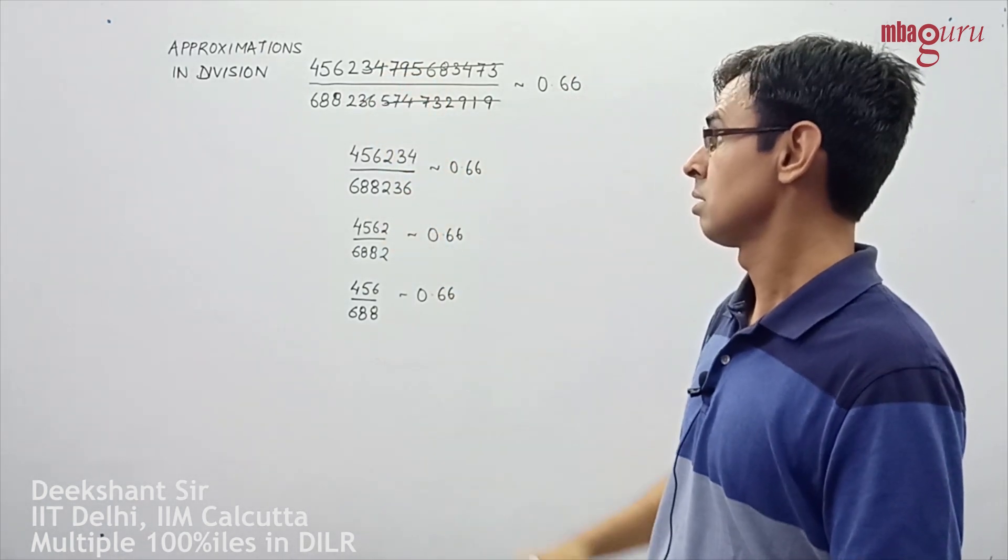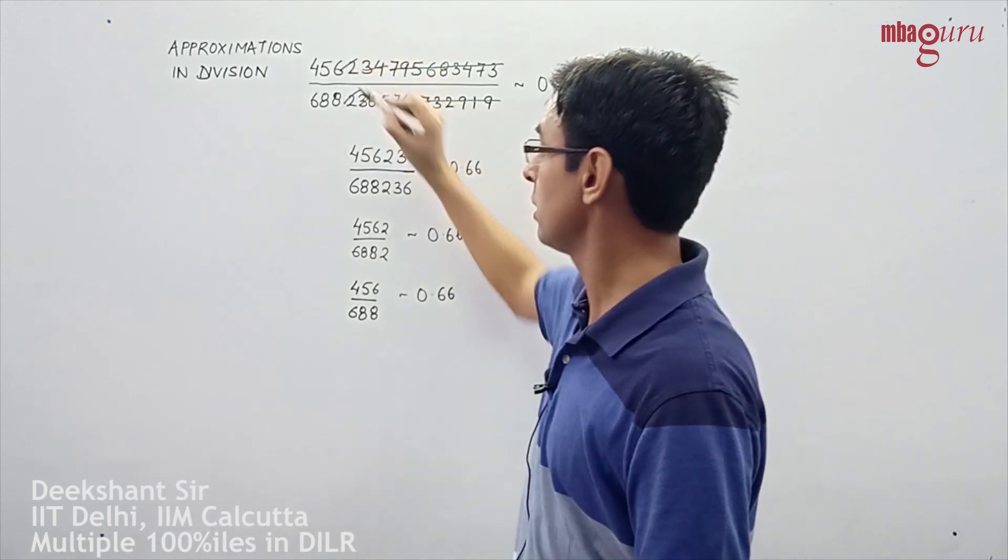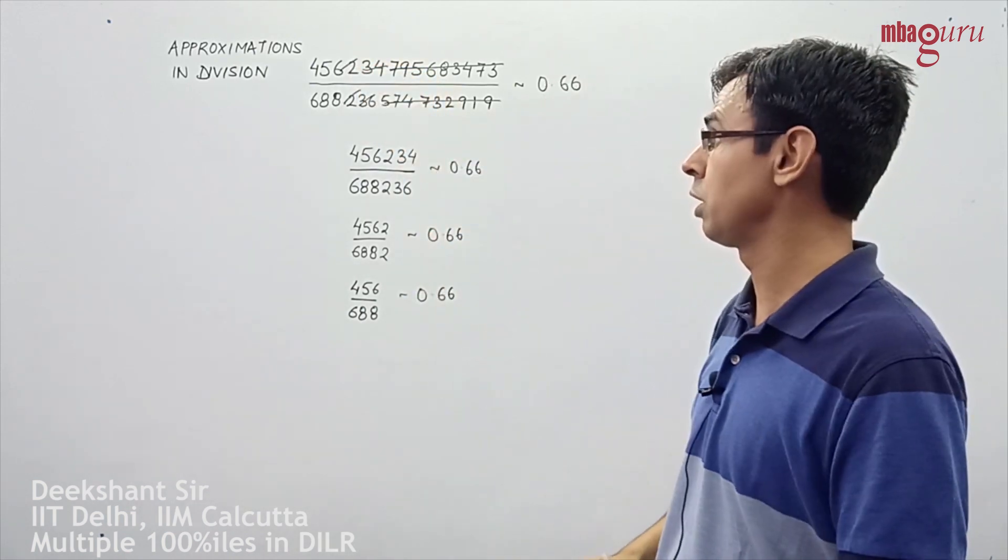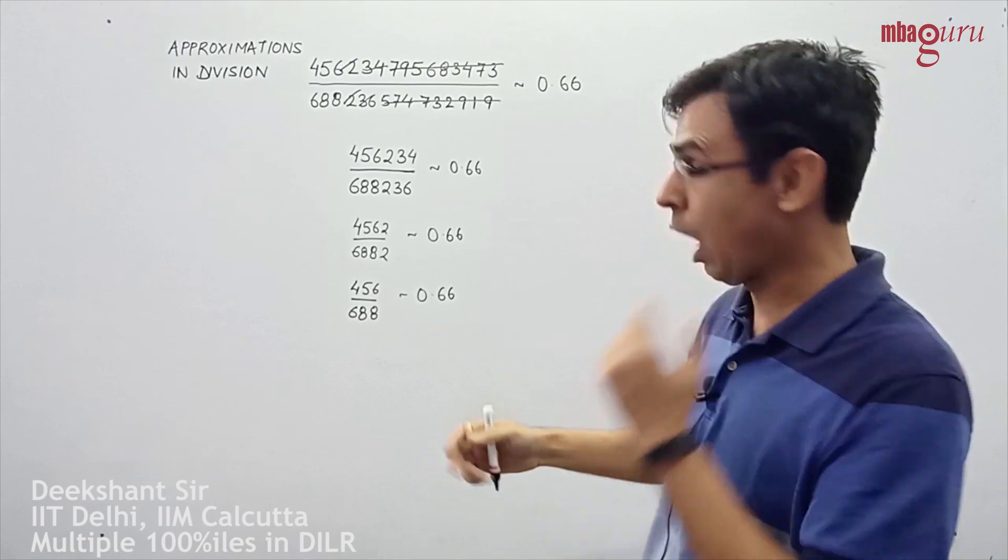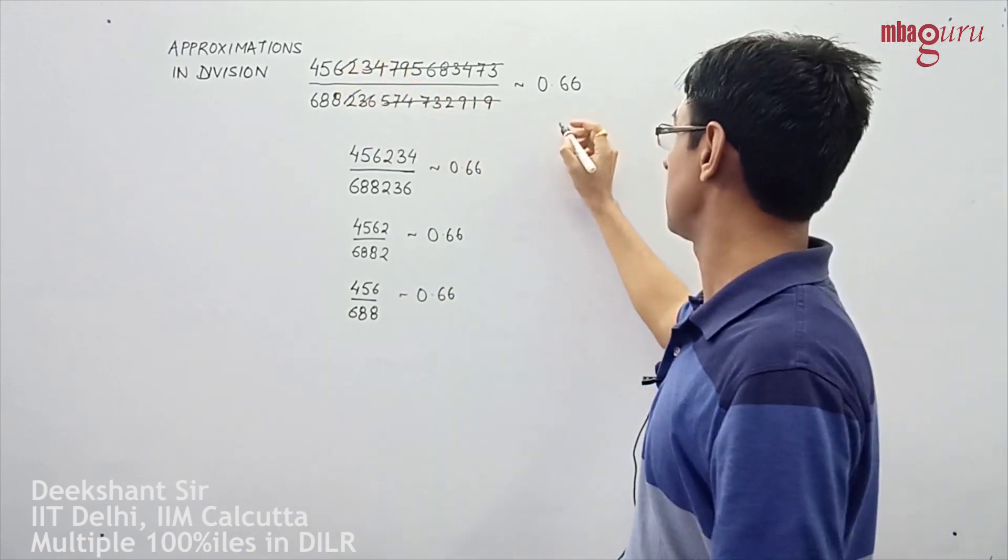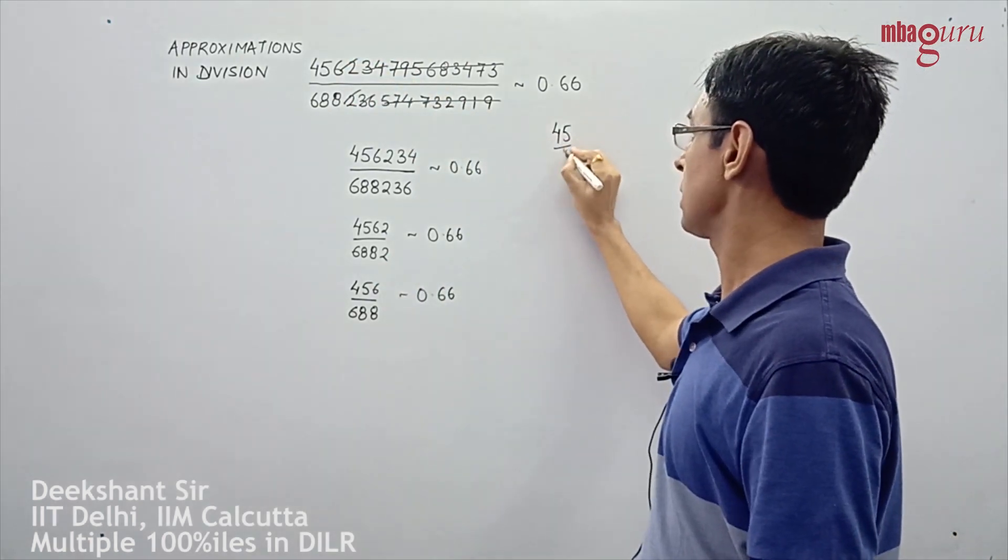In this case, I have removed another digit each from the numerator and the denominator. In fact, how I actually got the answer was to simply see it as 45 by 68.